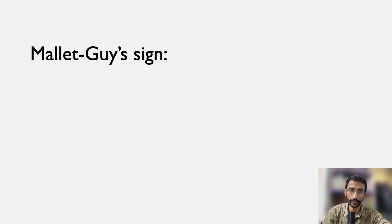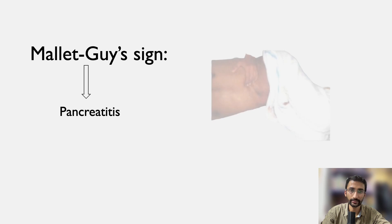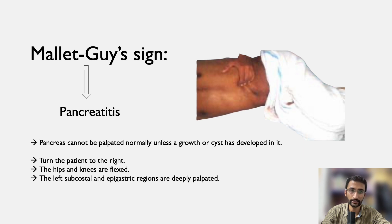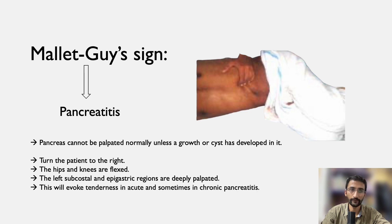Mallet Guy's sign is done in case of pancreatitis. The pancreas cannot be palpated normally unless a growth or cyst has developed. In this test, the patient is turned to the right with hips and knees flexed, and the left subcostal and epigastric regions are deeply palpated. This will evoke tenderness in acute and sometimes in chronic pancreatitis.